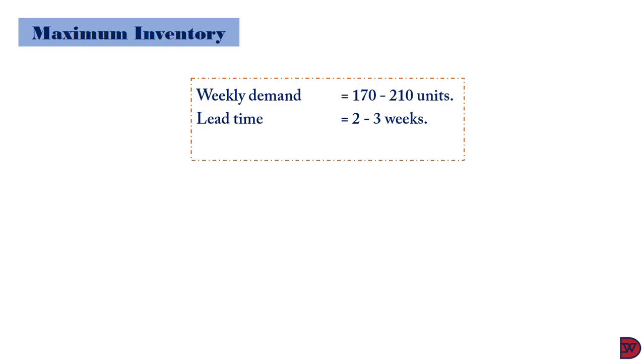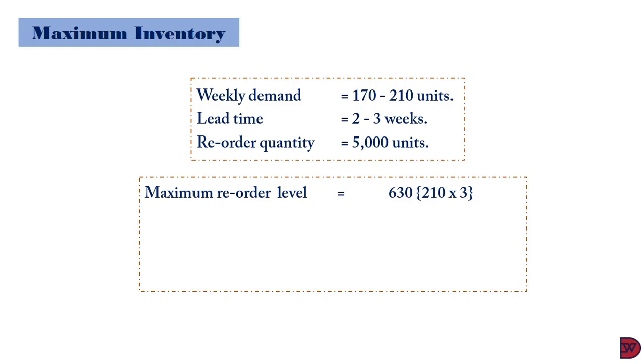The maximum reorder level will be 630, which is the maximum weekly demand of 210 multiplied by the maximum lead time of three. The minimum reorder level will be 340, which is the minimum weekly demand of 170 multiplied by the minimum lead time of two.